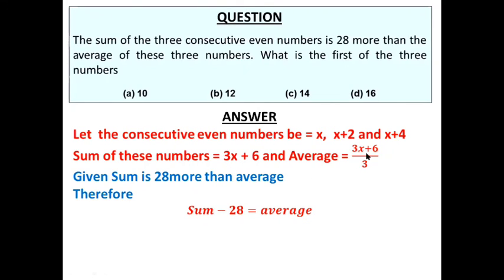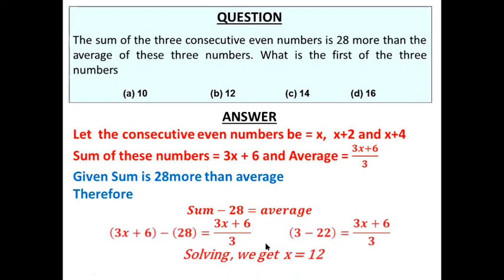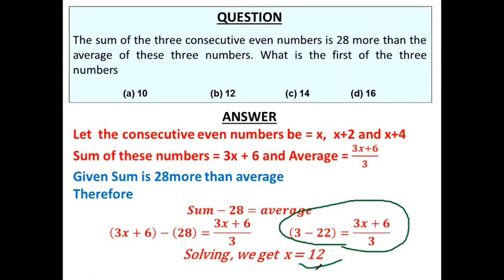We have sum = 3x plus 6 and average = (3x plus 6) divided by 3. So: 3x plus 6 minus 28 equals (3x plus 6) divided by 3. Solving: 3x minus 22 equals (3x plus 6) divided by 3, which gives x = 12. The first number, which we took as x, is 12. So the correct option is option B.